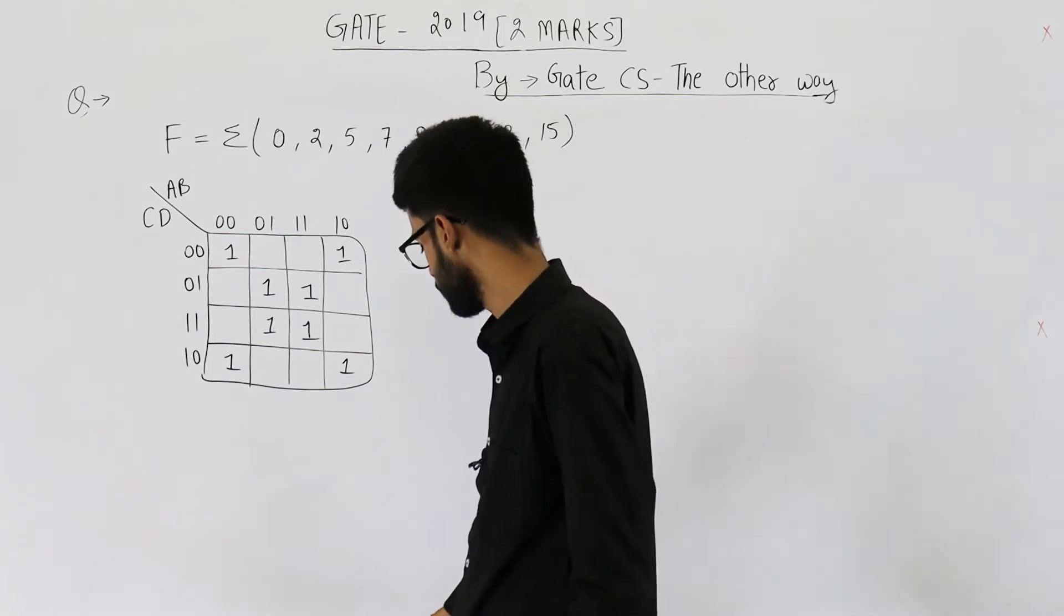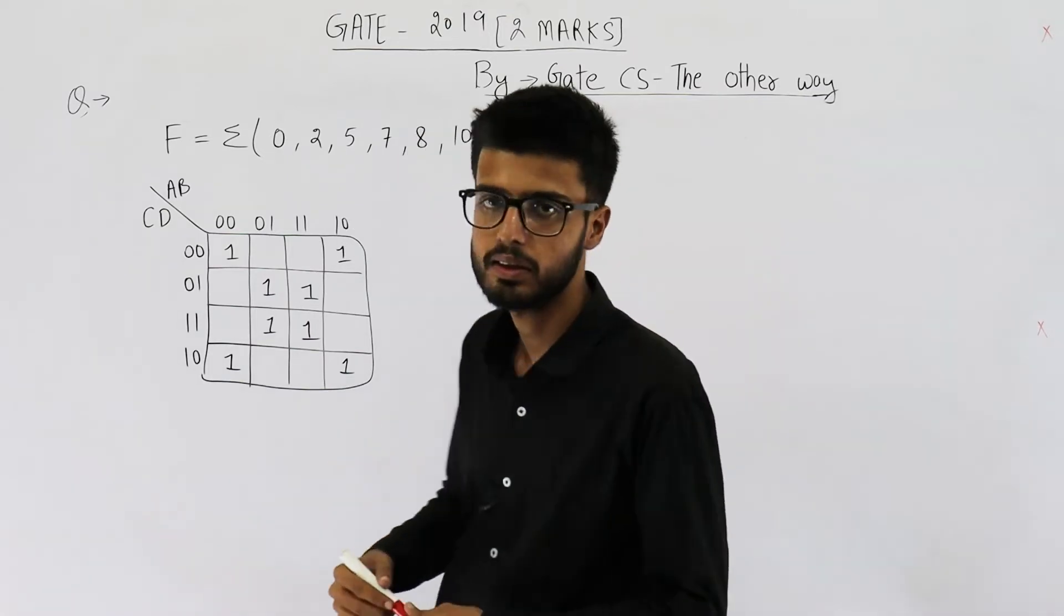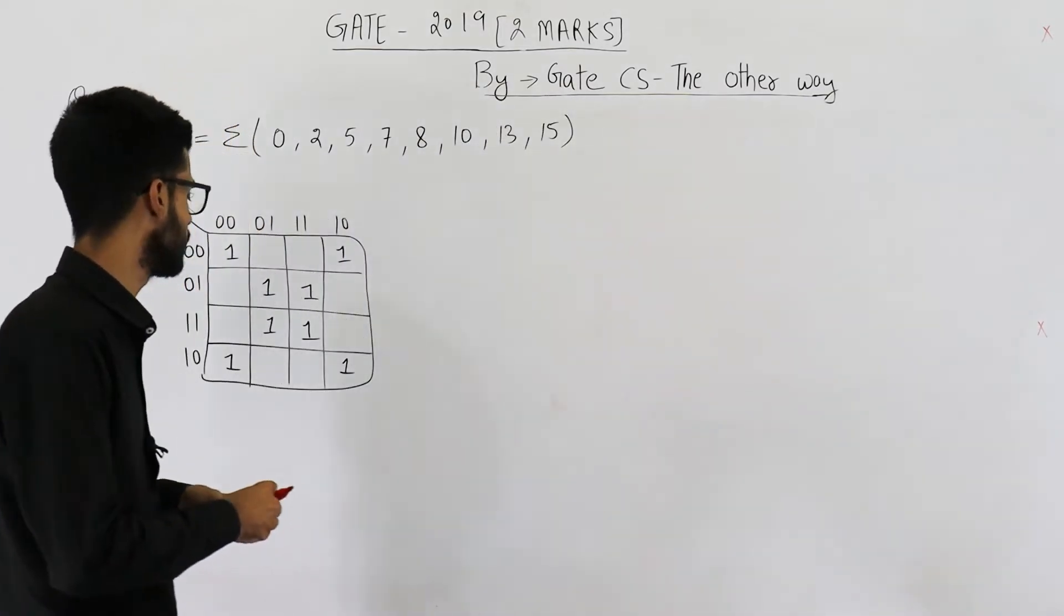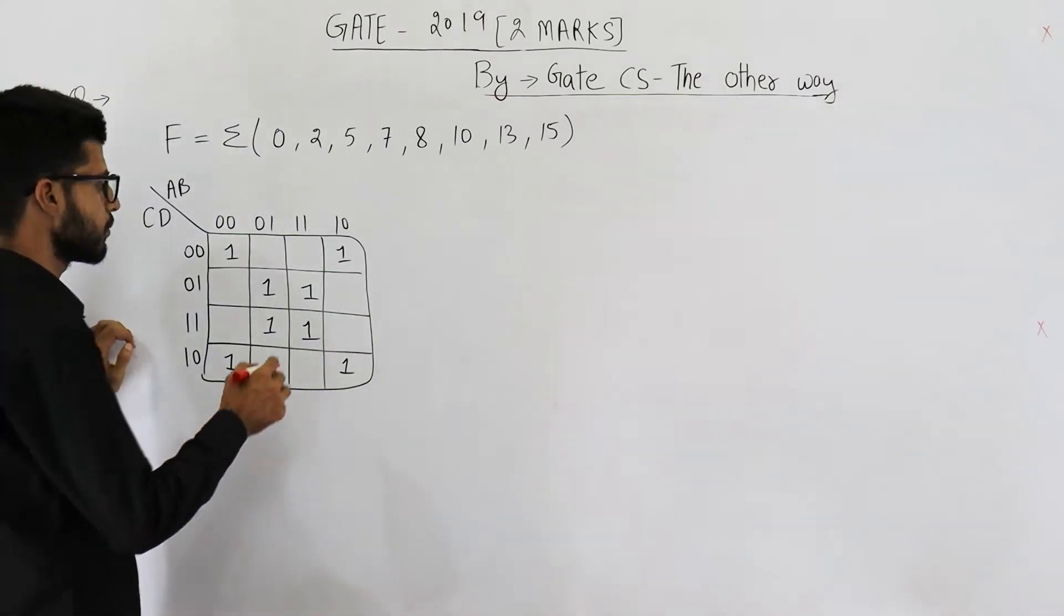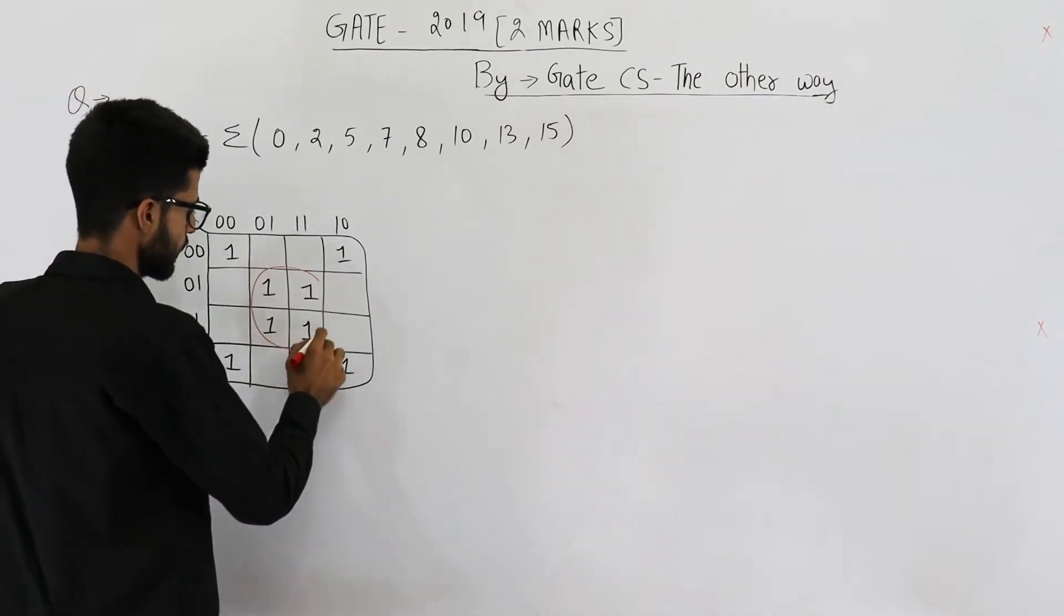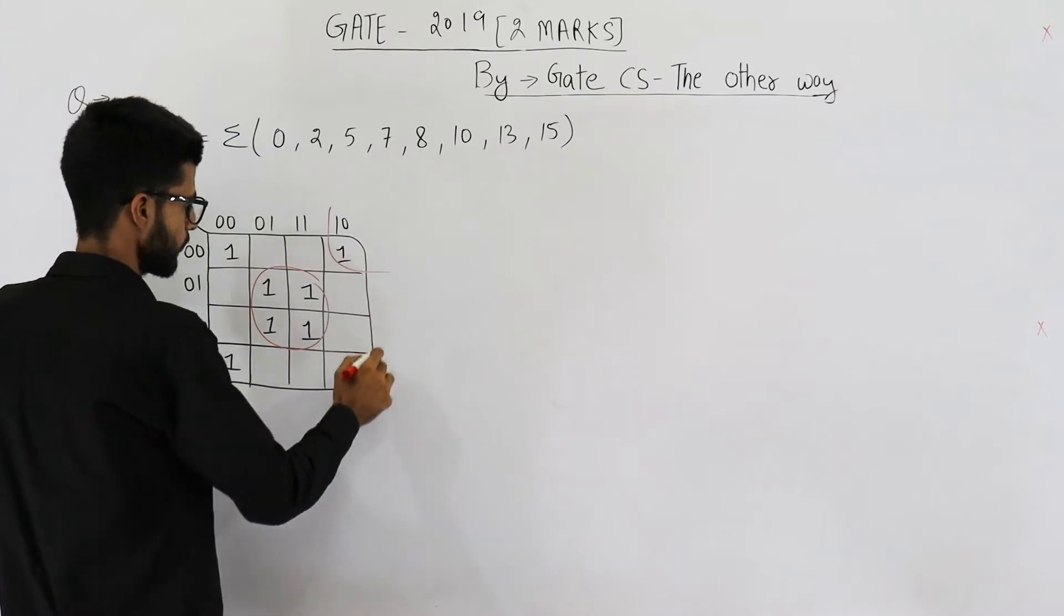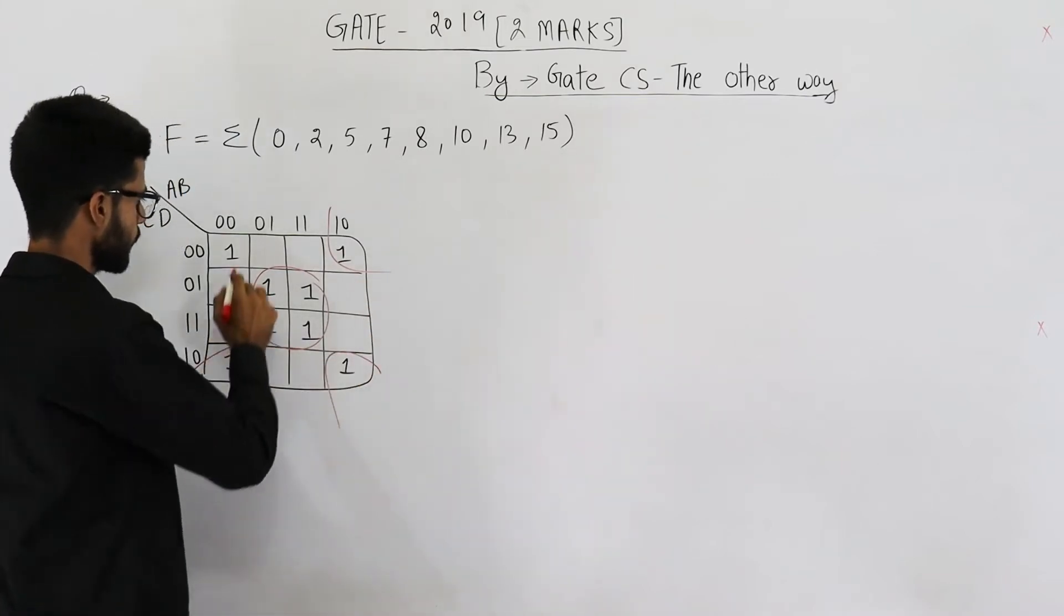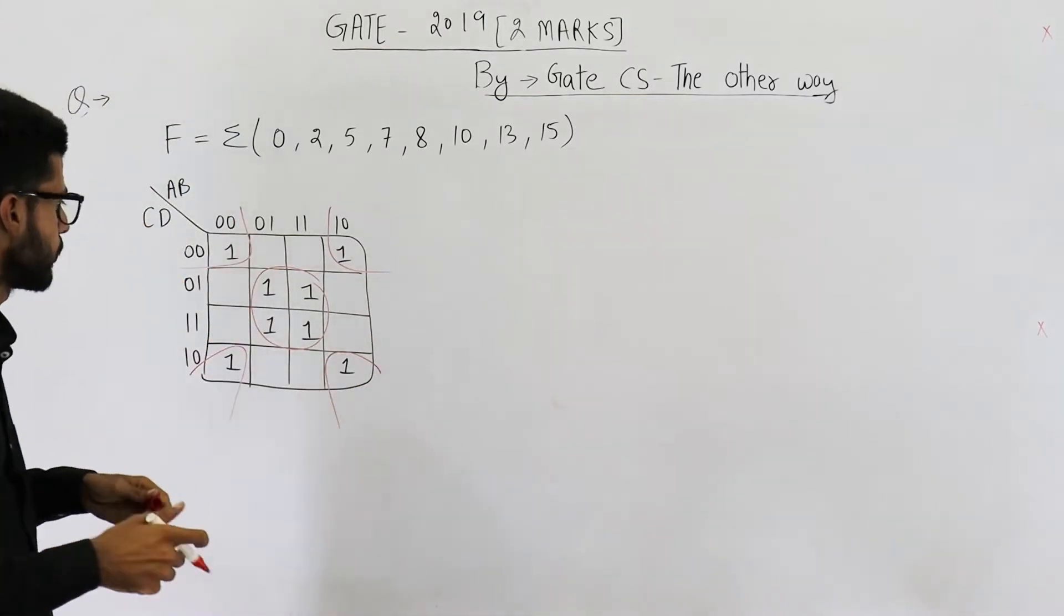Now let's minimize this by finding out all the essential prime implicants. Now we have solved this question multiple times. I think you know that these groups will be formed. So these are the two groups that will be formed.